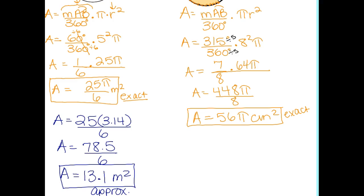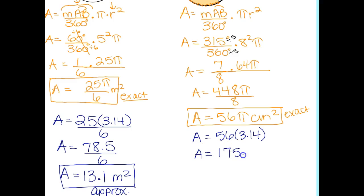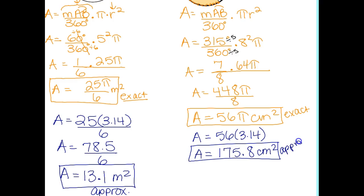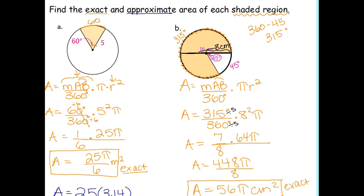To find the approximate area, we take out pi and replace it with 3.14. So 56 times 3.14 gives us 175.84, which we round to 175.8 centimeters squared. That is the approximate area — and both answers are for the shaded portion only.